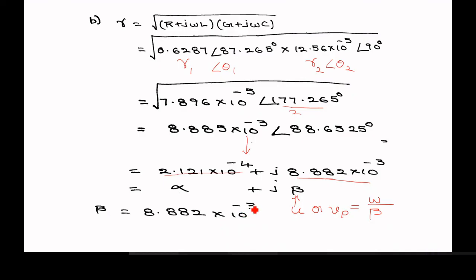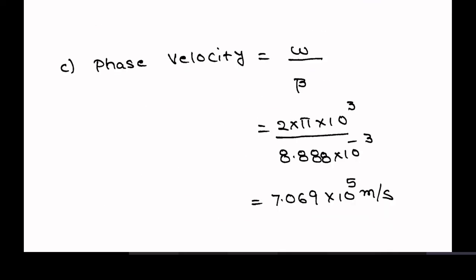The phase velocity is given by omega divided by beta. Omega is 2 pi f, and f is 1 kilohertz, so f = 10 to the power of 3. Using the beta value obtained from the propagation constant, the phase velocity works out to 7.069 into 10 to the power of 5 meters per second.